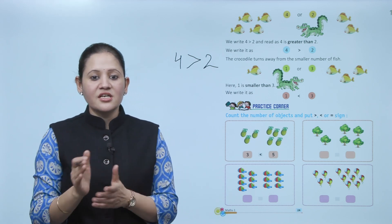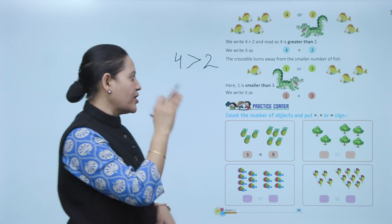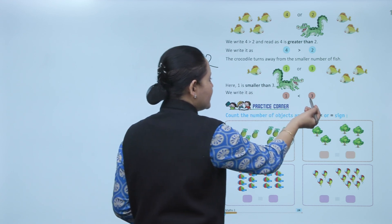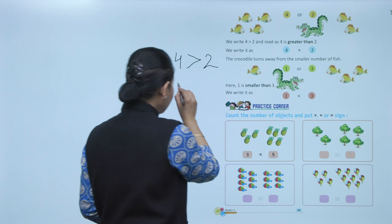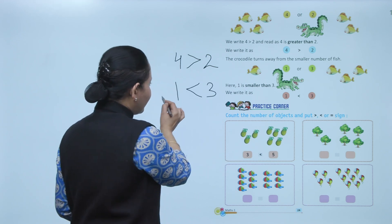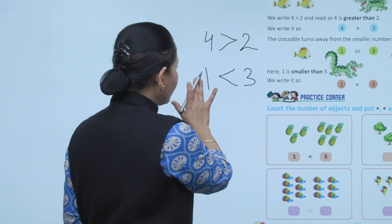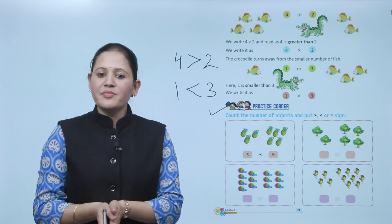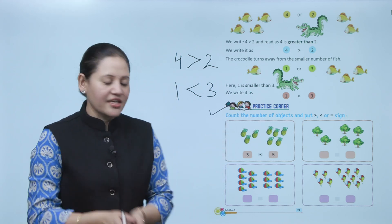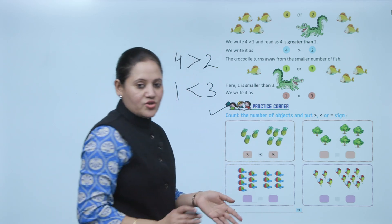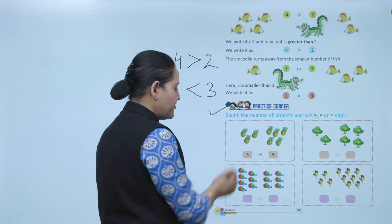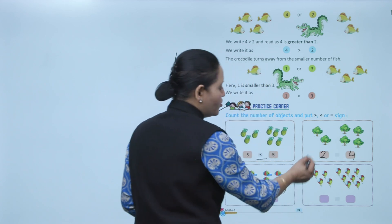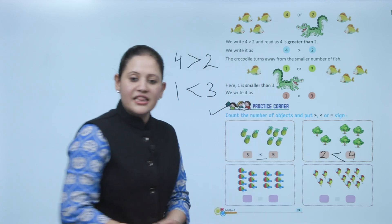The crocodile turns away from the smaller number of fish. So one is smaller than three — one is on the smaller side. Practice corner: count the number of objects and put greater than, less than, or equal sign. Here, three pineapples and five pineapples — five is more than three, so three is less than five, put the sign of less than. Here, two trees and four — two is less than four, so put the sign of less than.